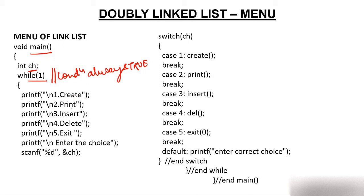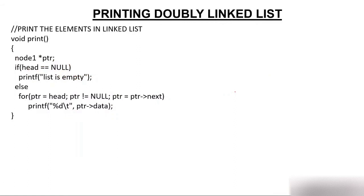The moment the condition is always true, I'll enter inside the while loop. There is: one for create, two for print, three for insert, four for delete, five for exit — enter your choice. Since I have to print, I'll press 2. The moment I press 2, ch will have 2, switch will have 2, and I'll jump to case 2, where I'm calling a function named print.